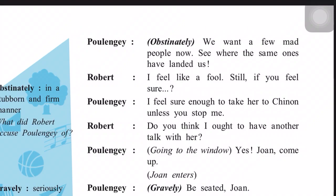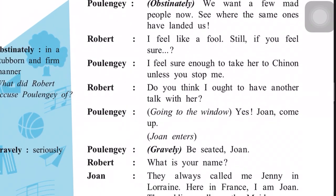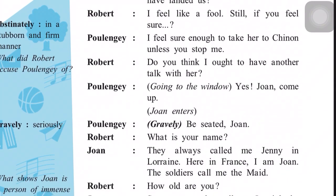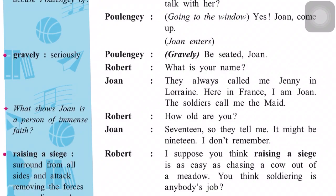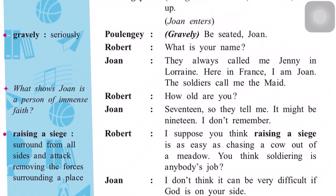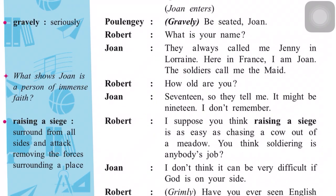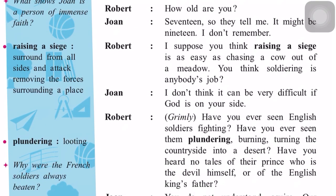Robert says: 'Do you think I ought to have another talk with her?' Polenji says: 'Yes.' Joanne is called up. Polenji seriously says: 'Be seated, Joanne.' Robert asks: 'What is your name?' Joanne says: 'They always call me Jenny in Lorraine. Here in France, I am Joanne. The soldiers call me the Maid.' Robert asks: 'How old are you?' Joanne says: '17, so they tell me. It might be 19 — I don't remember.' Robert says: 'I suppose you think raising a siege — a siege means when you surround your opponents so they can't go anywhere and you attack them — is as easy as chasing a cow out of a meadow. You think soldiering is anybody's job.'